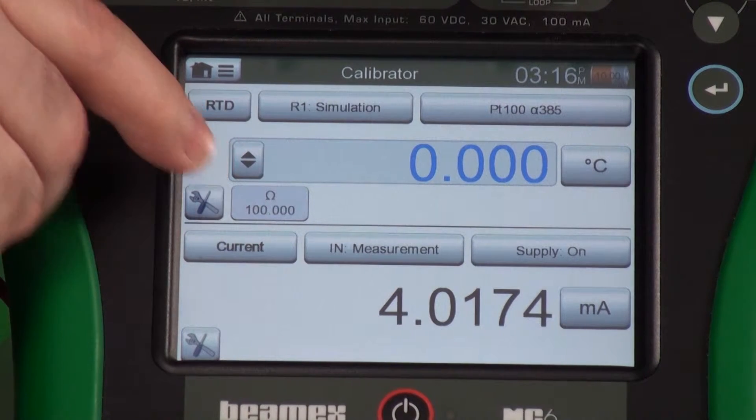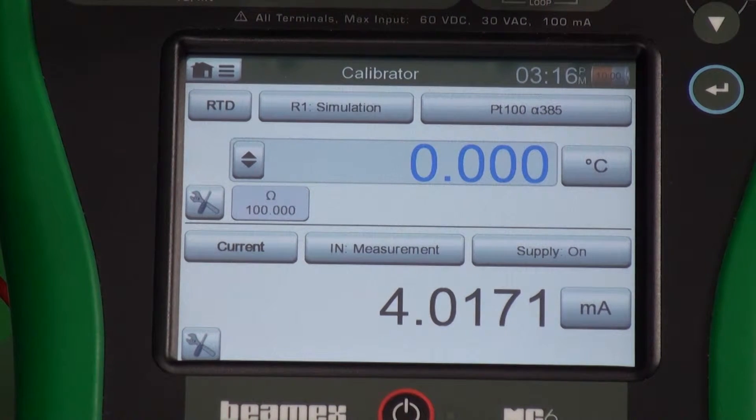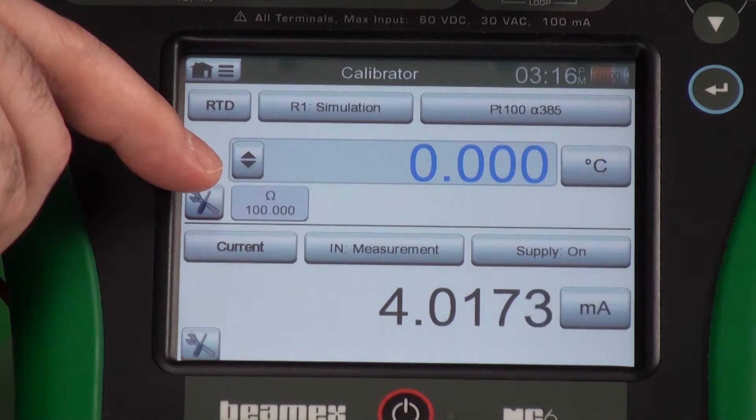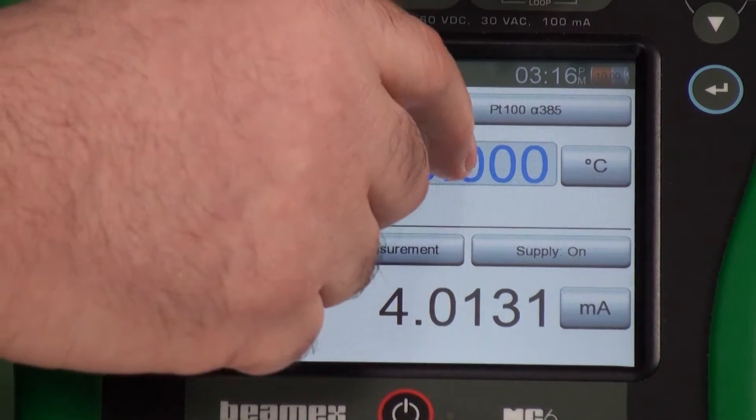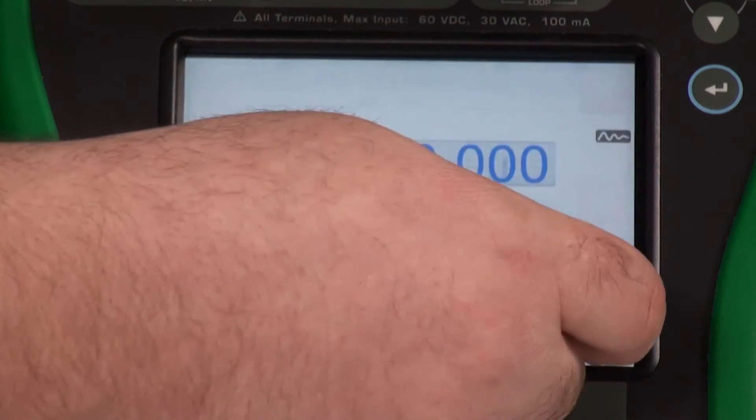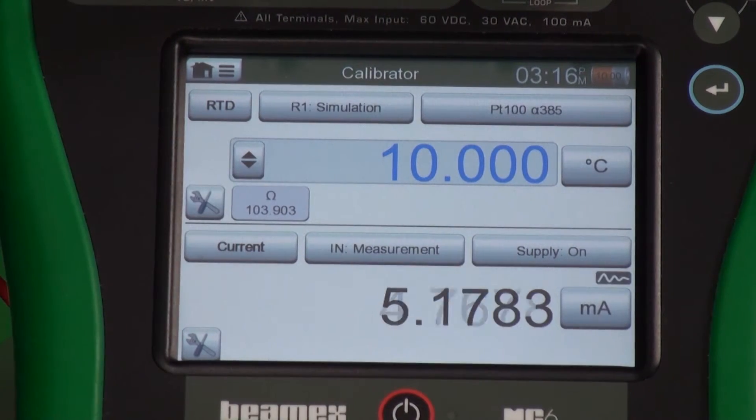On here, the definition of a Platinum 100 385 is that you get what resistance at zero degrees Celsius? You get 100. So we're showing that we're actually simulating 100 ohms into this. Let's change the value. Maybe I want 10 degrees. My resistance has changed.